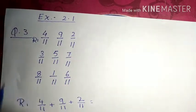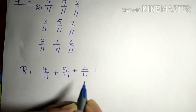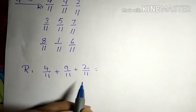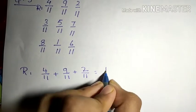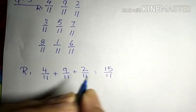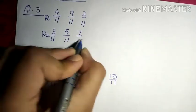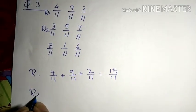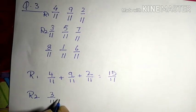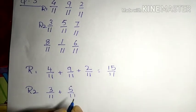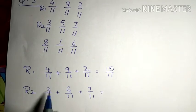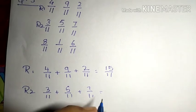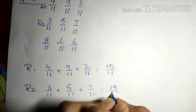So this is row 1. Row 1 is given 4/11, 9/11 plus 2/11. So we have to add them. So 9 plus 2 is 11, 11 plus 4 is 15/11. Now row 2 is this one. Row 2 is equal to 3/11 plus 5/11 plus 7/11. 5 plus 3 is 8, 8 plus 7 is 15. So 15/11.